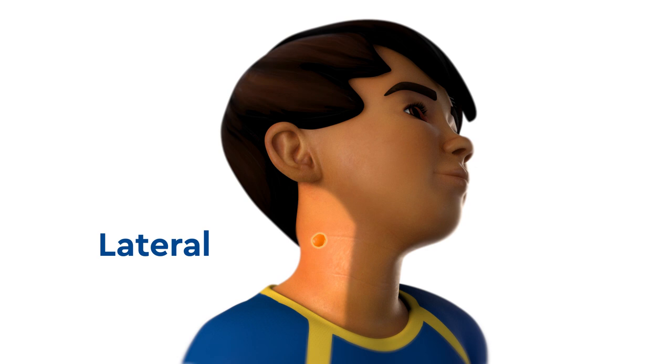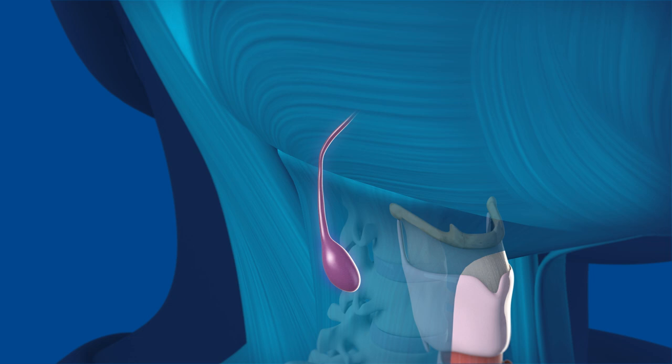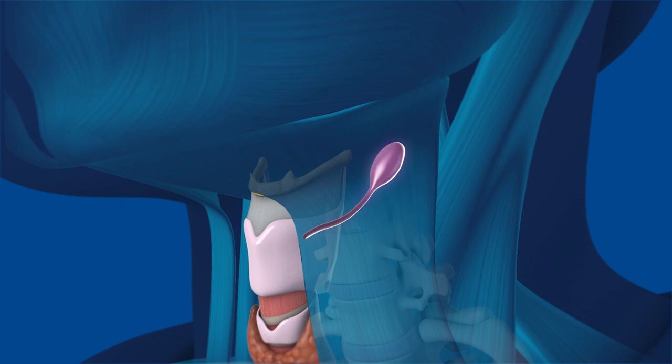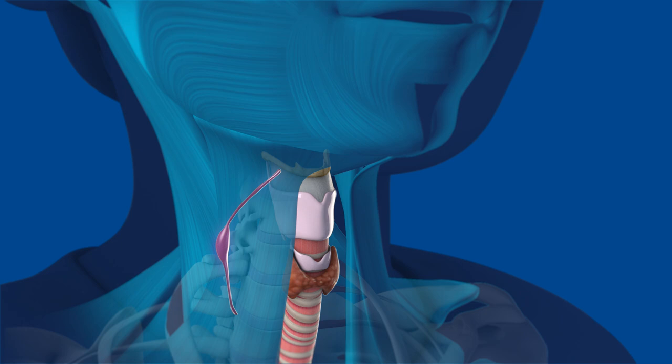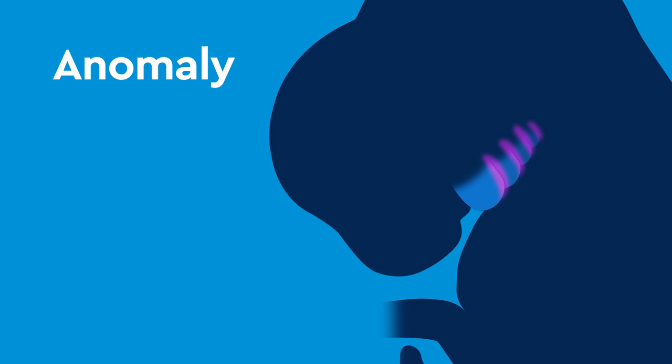A brachial cleft anomaly is an example of a lateral cystic neck mass. These anomalies can present as a cyst, a neck pit with a dead end called a sinus, or a neck pit with an internal opening called a fistula. The brachial cleft system is a series of slits along the side of the neck, present during embryonic development. An anomaly means that a part of the system developed differently than expected.